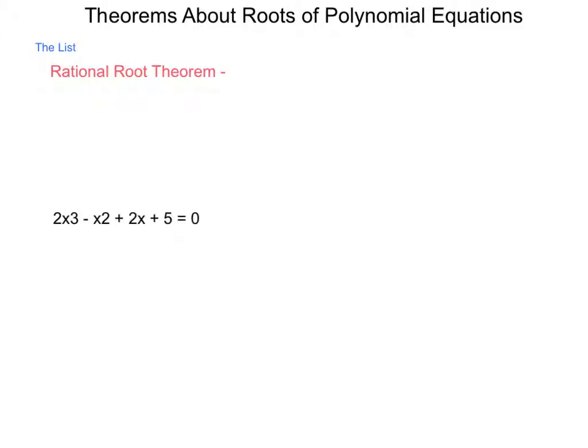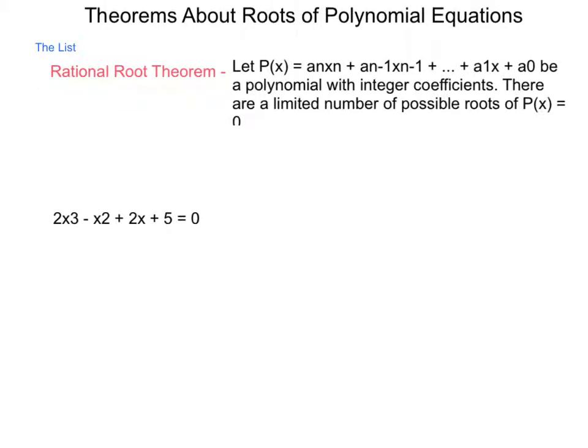The first one we're going to have is called the rational root theorem, and this one states, let P(x) equal a_n x^n + a_(n-1) x^(n-1) all the way down to a_1 times x plus a_0. Be a polynomial with integer coefficients. There are a limited number of possible roots of P(x) = 0.